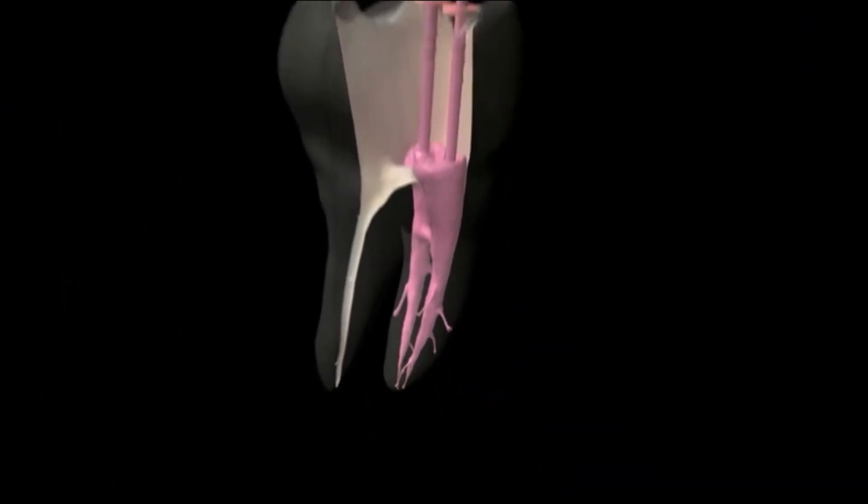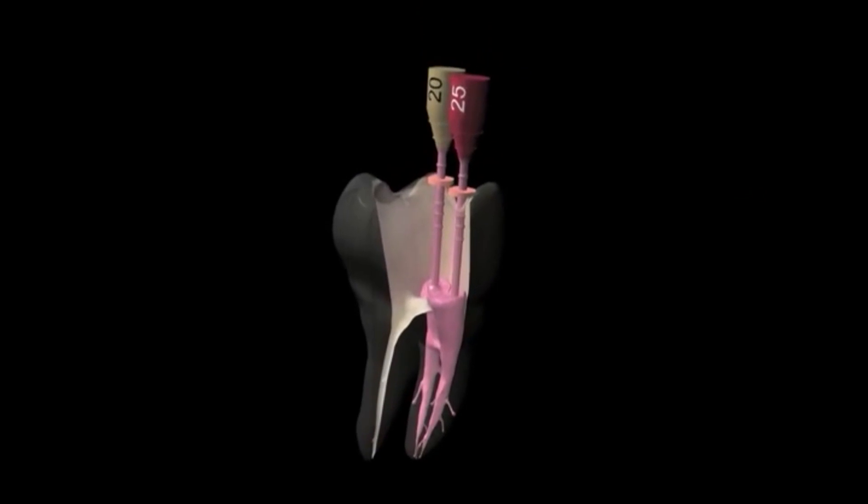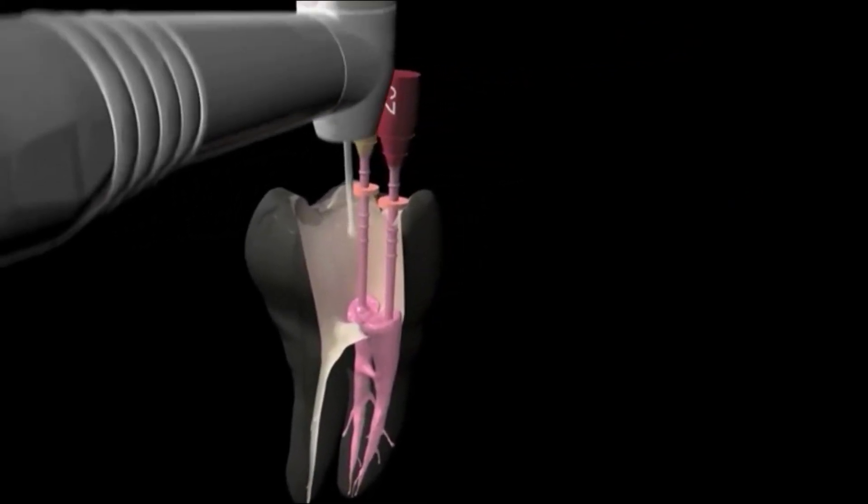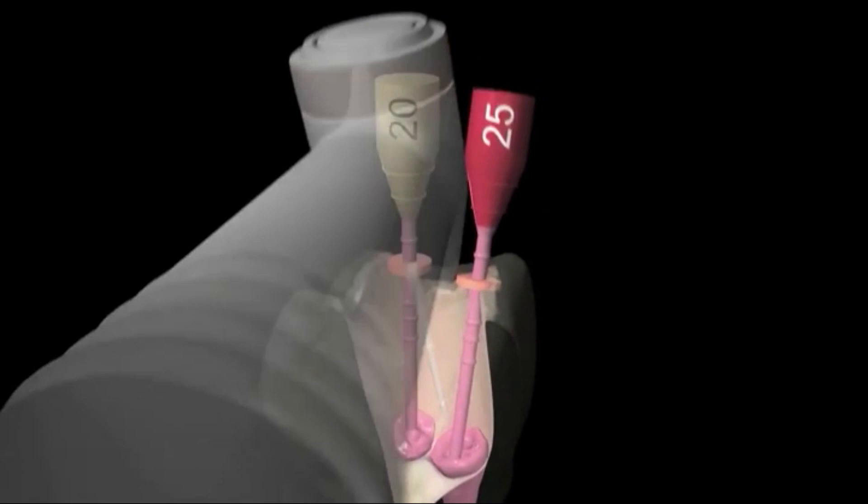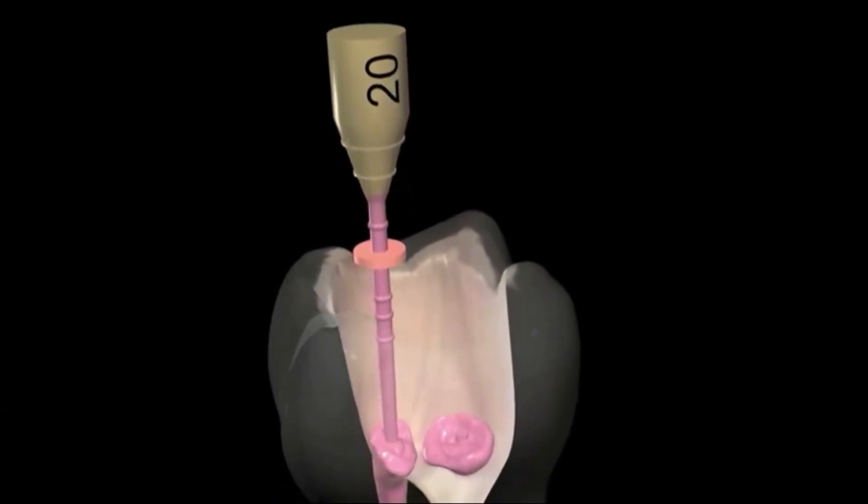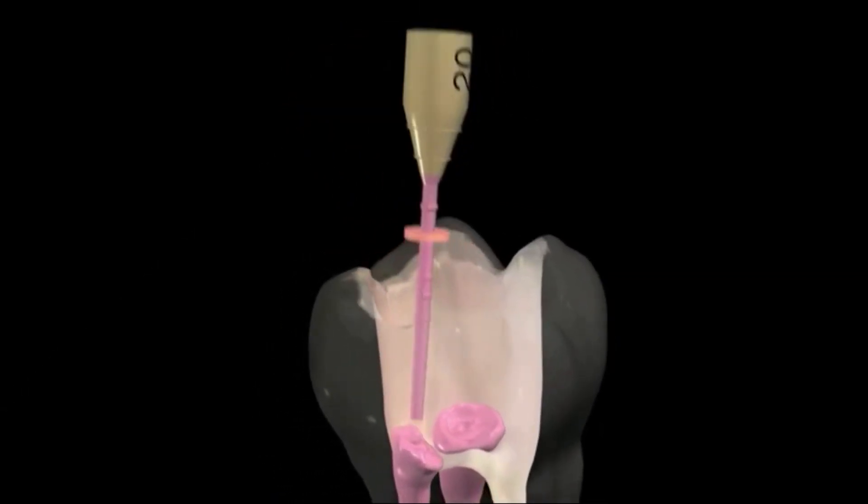When GuttaCore reaches its working length, use a round burr to sever the obturator at the canal orifice. You can also remove it by bending from side to side without impacting the seal.